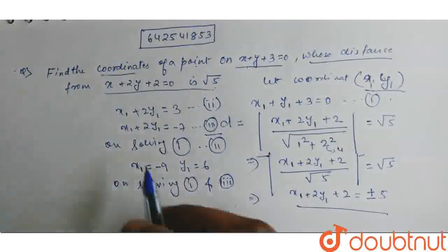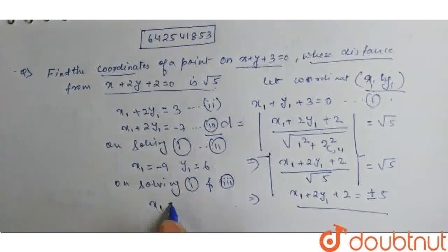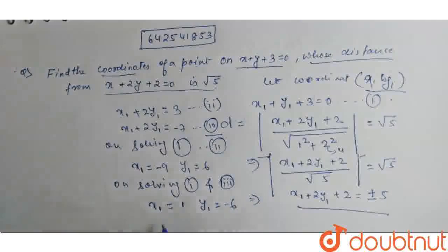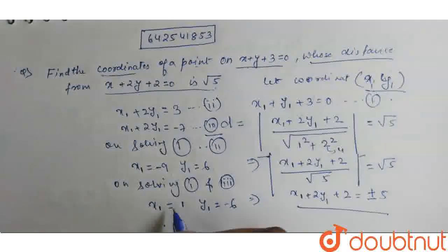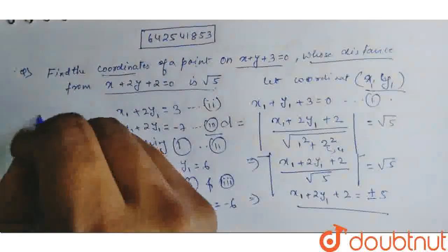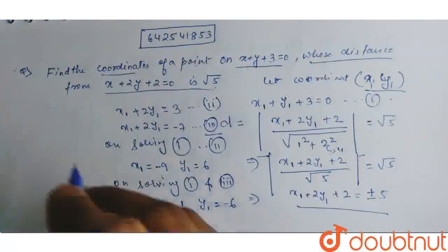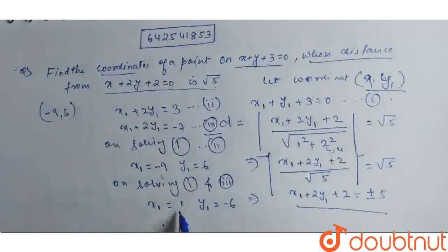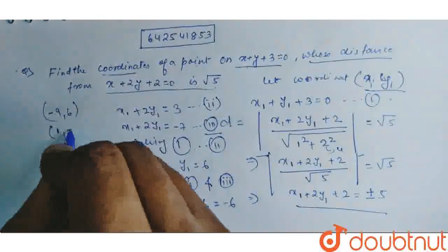So, here we get two coordinates. One coordinate is minus 9 and 6. And the second coordinate is 1 and minus 4.